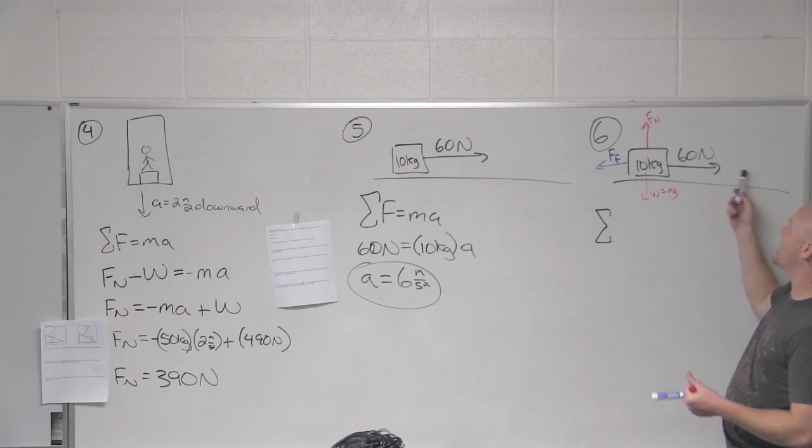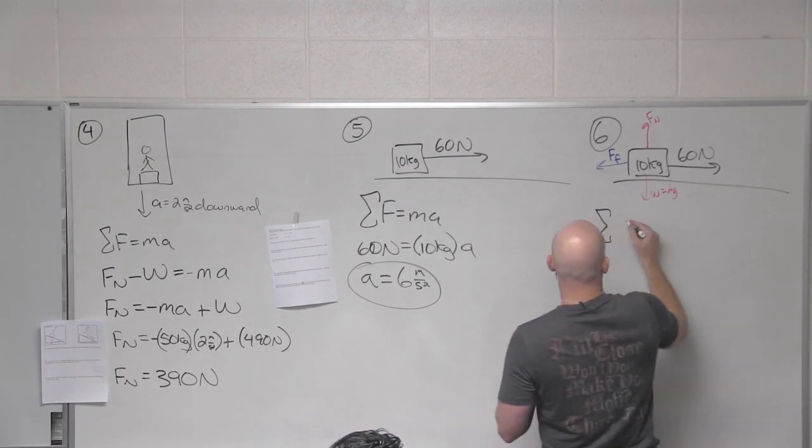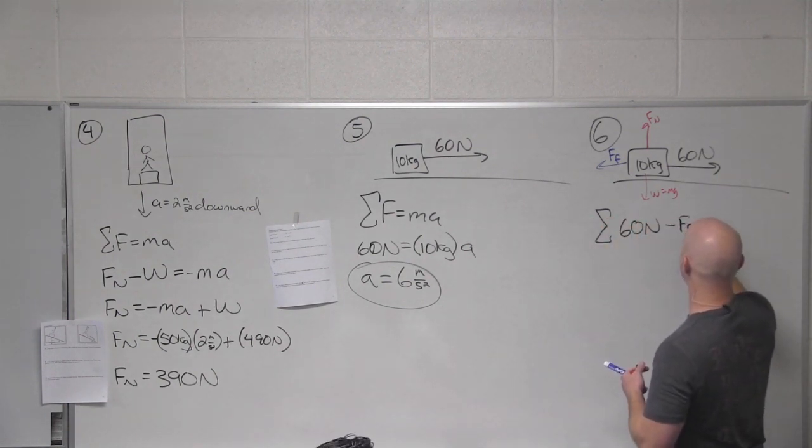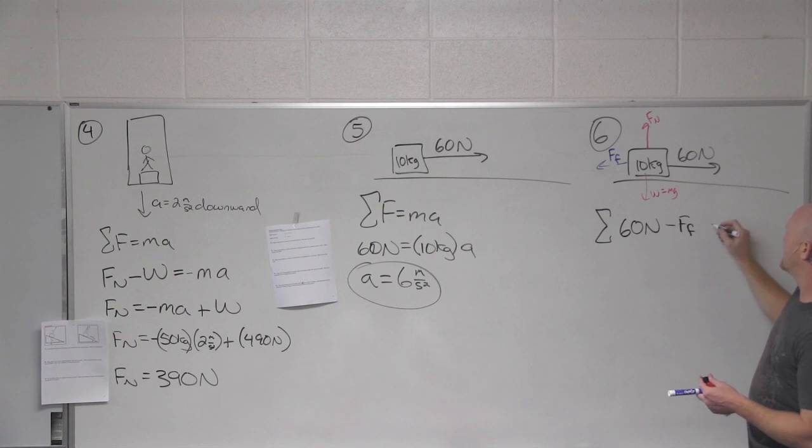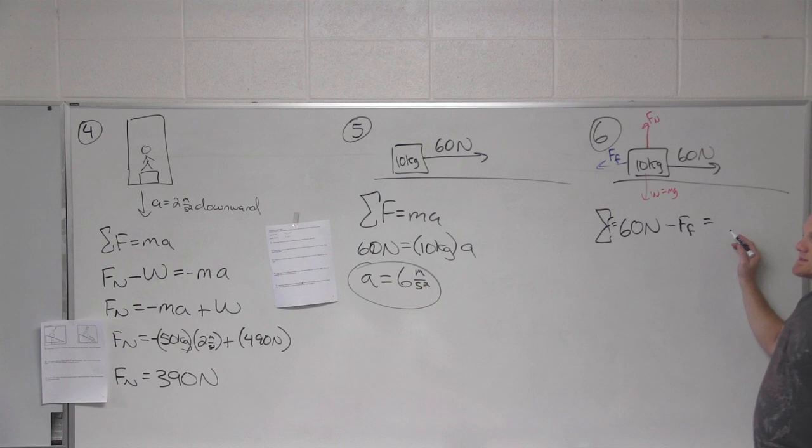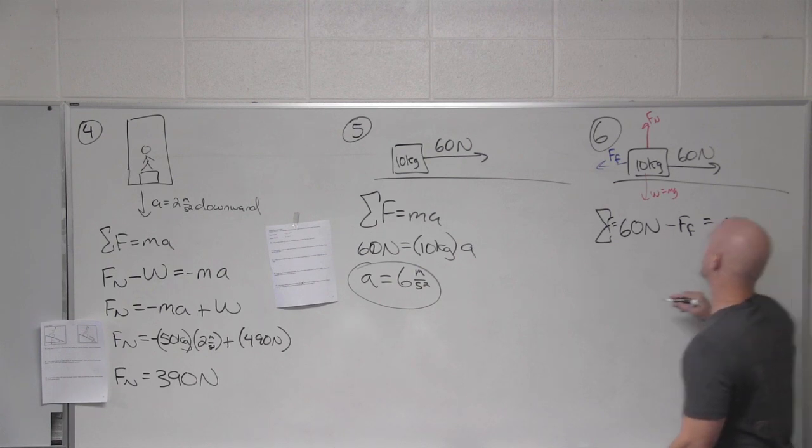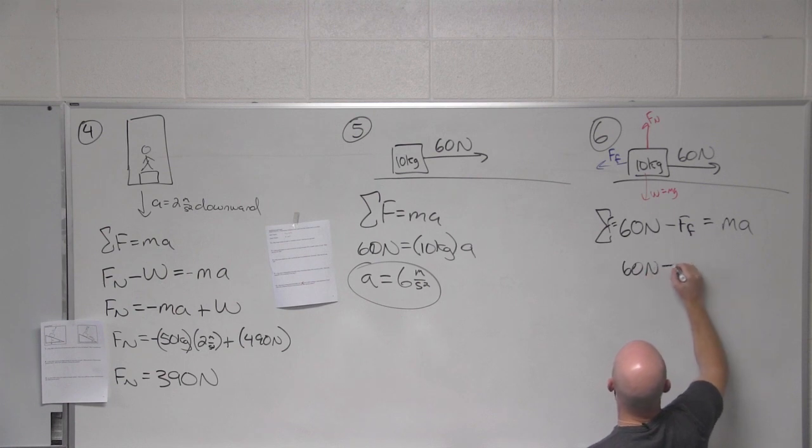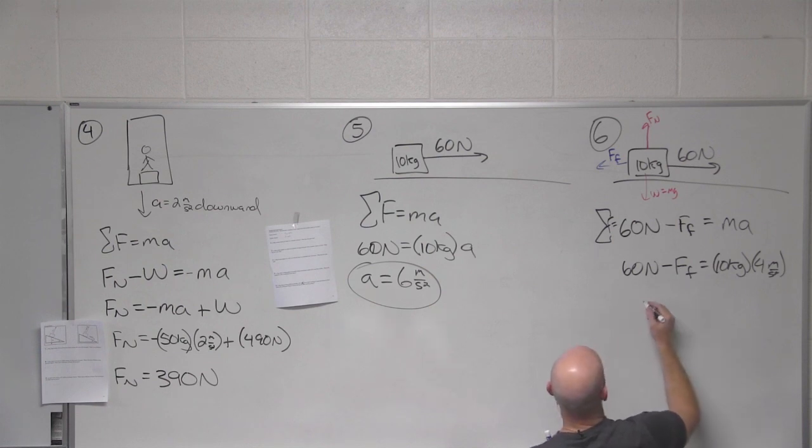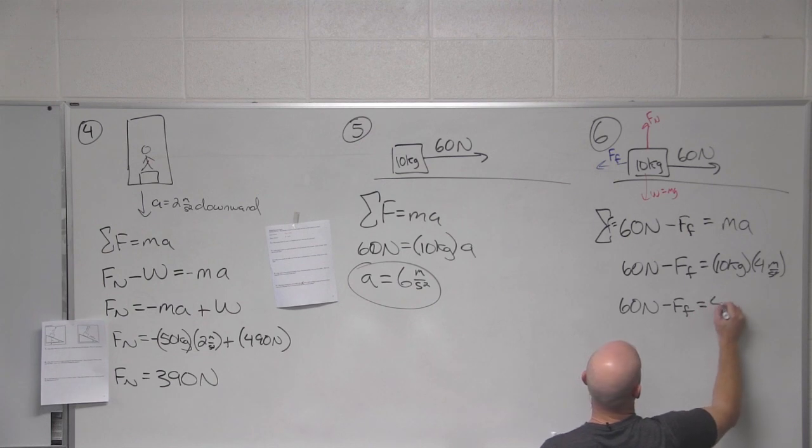All right, so we'll deal with just the x direction. I'm going to call the 60 newtons pushing to the right positive and subtract off the force of friction. So I'm defining to the left as negative. That is the sum of my forces. And what does the sum of forces always add up to? Ma. So 60 newtons minus our force of friction, got a 10 kilogram mass, acceleration 4 meters per second squared. What can you imply about your force of friction? 20 newtons.